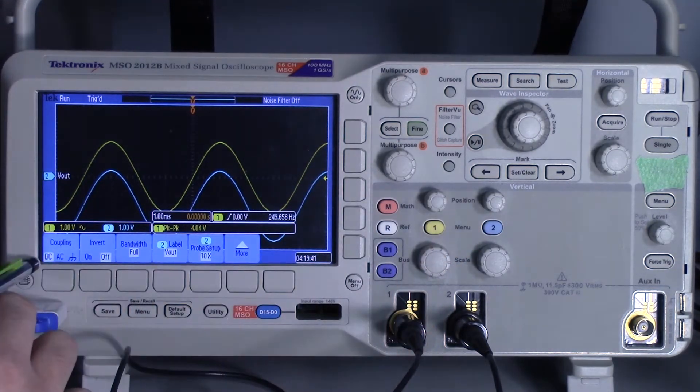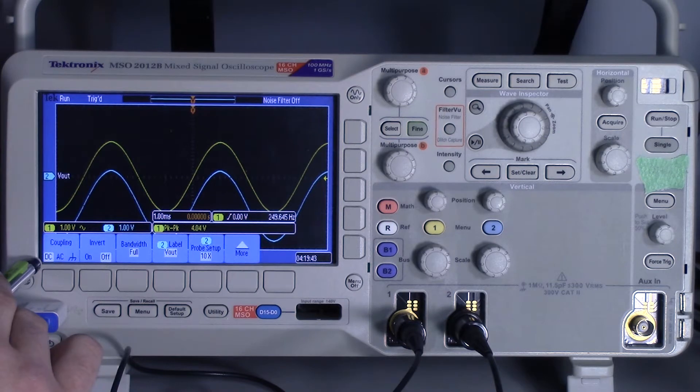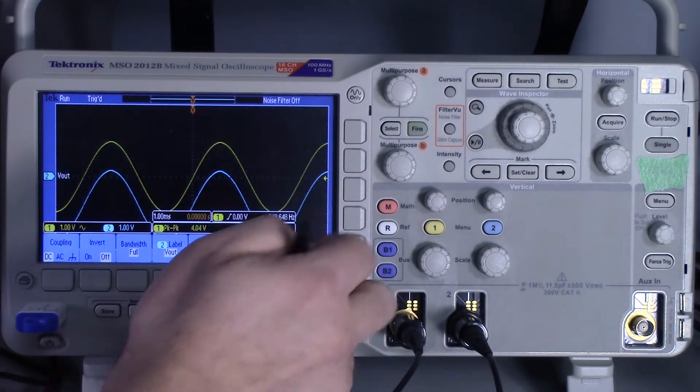And then over in channel 2 I have it set to DC because I want to see the DC offset. I want to measure both components - I want to measure the AC as well as the steady state DC voltage of this channel 2.